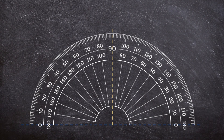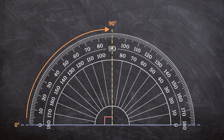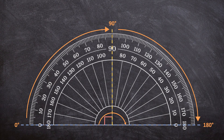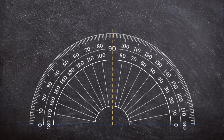On the outside, we go clockwise — starting at zero, going clockwise until we reach 90 degrees, and further clockwise until we reach 180 degrees. When using the inner numbers, you start at the right with zero, then go counterclockwise until you reach 90 degrees, and then further counterclockwise until you reach 180 degrees.